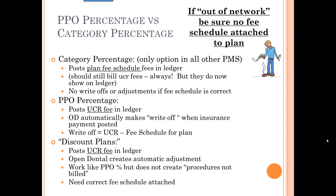The last type is the discount plan, which is sort of a special type of PPO percentage. It posts a UCR fee just like the PPO percentage did, but it creates an automatic adjustment depending upon the difference between the UCR fee and the fee schedule associated with the discount plan. You have to have a fee schedule attached — you have to create a fee schedule for each type of your discount plans, not for each patient.